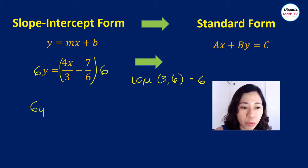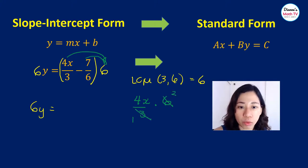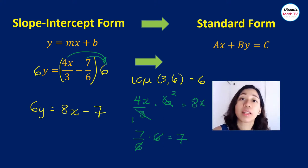So I have 6y equals, again I am distributing. 4x over 3 times 6. Let me put that here for scratch. 4x over 3 times 6, so this becomes 2, this is 1, so therefore that is 8x. I have 8x minus 7 over 6 times 6, which equals 7. Understand?